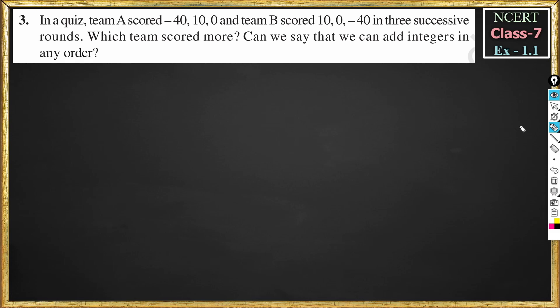Can we say that we can add integers in any order? In the question, it is given that team A and team B played 3 successive rounds of a game. Team A scored minus 40, 10, and 0, whereas team B scored 10, 0, and minus 40. We should find which team scored more points.